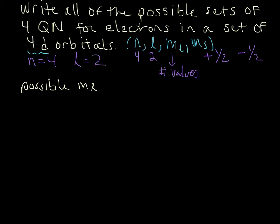So since l is 2, m sub l can be anywhere from negative l to positive l separated by 1, an increment of 1. So m sub l can be negative 2, it can be negative 1, it can be 0, it can be 1, and it can be 2. So those are all the possible m sub l values.